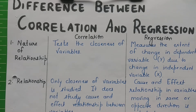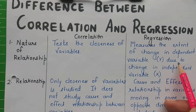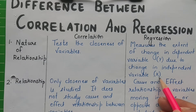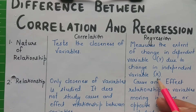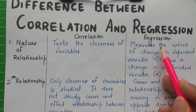Number one: nature of relationship. Correlation studies the closeness between two variables — if one increases, does the other also increase or decrease? It checks whether the relation is linear or non-linear. But regression measures the extent of change in the dependent variable due to change in the independent variable. There are two variables: dependent variable y and independent variable x. It tells us that if x changes, to what extent will y change — basically, how much impact will there be on y when x changes.